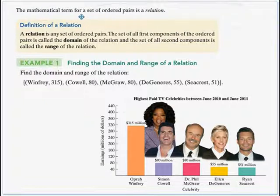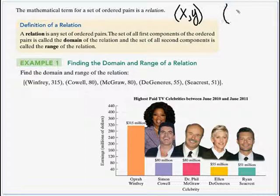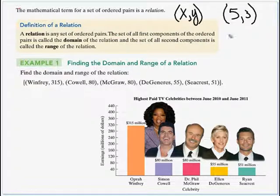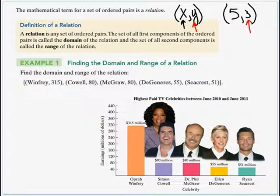The mathematical term for a set of ordered pairs is a relation. Up until now in your math classes, that is usually an x, y coordinate — points in the Cartesian plane like (5, 3). So a relation is any set of ordered pairs. The set of all the first components of the ordered pairs is called the domain — usually our x values. The set of all the second components is the range.